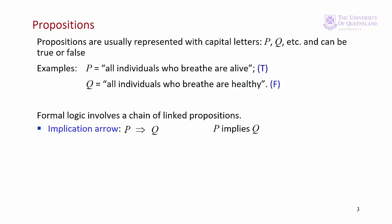Logical operations involve a series of linked propositions. The two links we'll consider are implication arrows and equivalence arrows. Here we have an implication arrow. So we'll read that as P implies Q. If P implies Q, then if P is true, it follows that Q is also true.